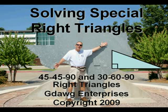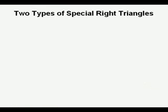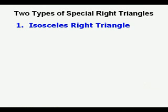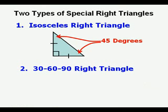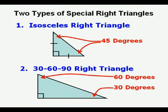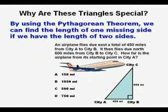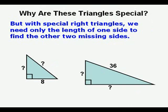Solving special right triangles: 45-45-90 and 30-60-90 right triangles. We're going to examine two types of special right triangles today: an isosceles right triangle where you have two 45 degree angles and two sides equal, and secondly a 30-60-90 right triangle with one angle at 30 degrees, one at 60 degrees, and of course the other one at 90 degrees. Now why are these triangles special? By using Pythagorean theorem we can find the length of one missing side if we have the length of two sides. But with special right triangles, we need only the length of one side to find the other two missing sides.